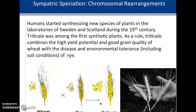Other ways that we see sympatric speciation: chromosomal rearrangement, which we do most often artificially. We started synthesizing new plant species in labs in the 19th century. Making a wheat and rye cross was one of the first synthetic plants. It had a really high yield, good grain quality, and was very disease resistant and resistant to deficiencies in the soil. Essentially, wheat and rye do not have the same number of chromosomes, but we reworked it in the lab so that it was a new species that could reproduce and pollinate itself and produce more food for us.